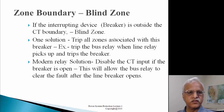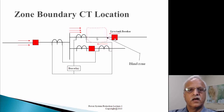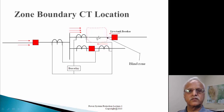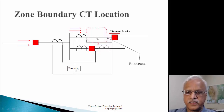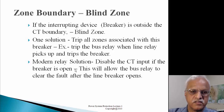The solution in modern relays is: as soon as the live tank breaker opens, they remove the current accounted for in the bus relay. If this current becomes zero but the sum of the remaining currents is not equal to zero, the bus relay also operates. This is one of the methods used to address blind zones.